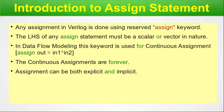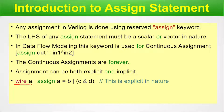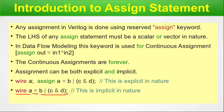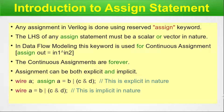Assignment can be both explicit and implicit. Explicit means we write it in detail; implicit means we do not. In the explicit form, we first define 'wire a' and then assign 'a' with the logical equation on the right hand side, using both the 'wire' and 'assign' keywords. In the implicit form, the same thing is written as 'wire a = expression', where the 'assign' keyword is omitted but still serves its purpose.